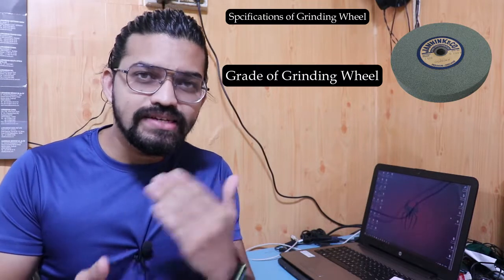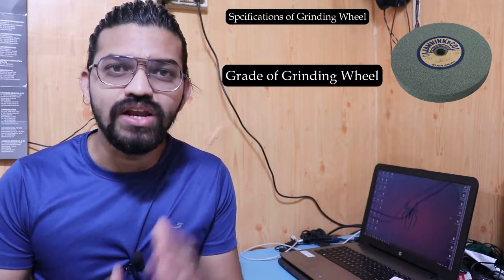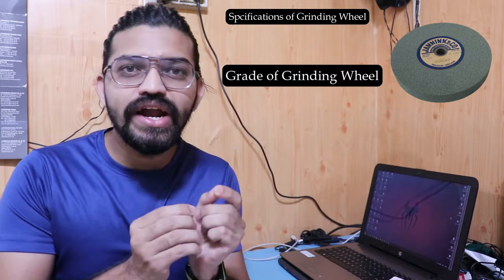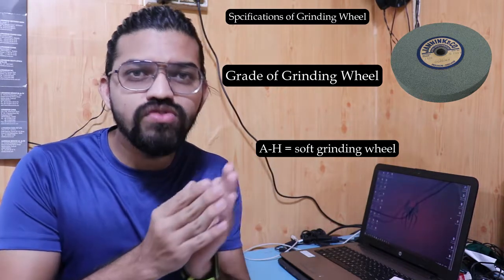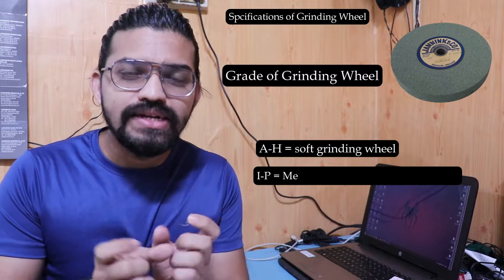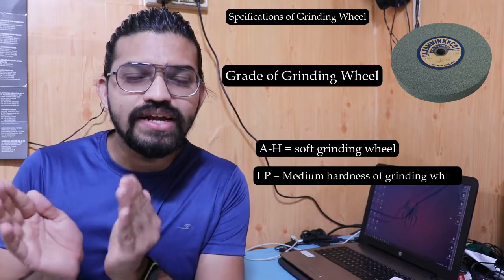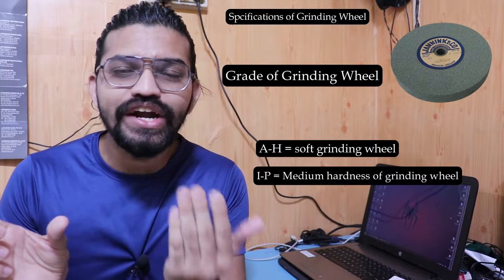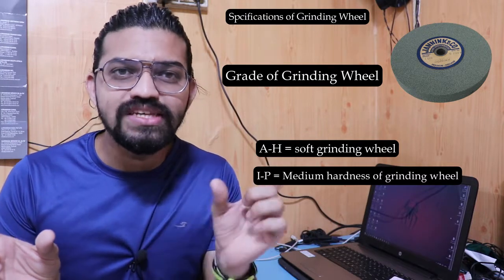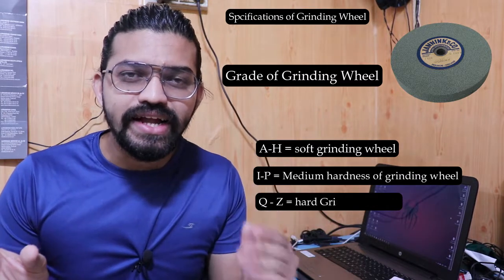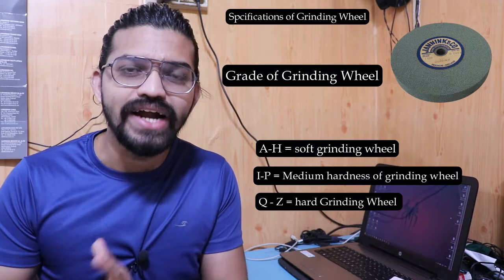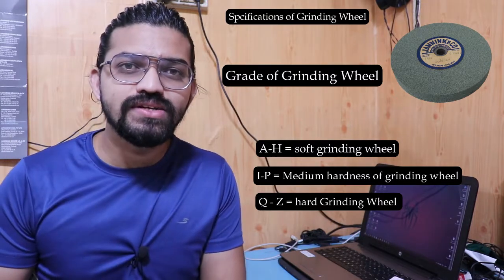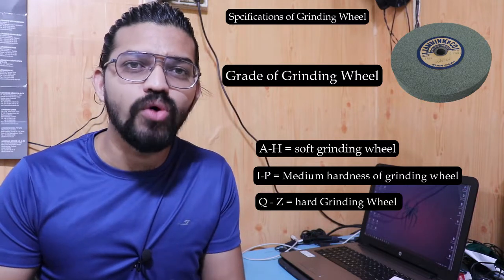The grade of the grinding wheel represents its hardness. If the grade is between A to H, it is a soft grinding wheel. If the grade is between I to P, it has moderate hardness. Grades from Q to Z represent extremely hard grinding wheels. The grade is selected purely based on the material of the workpiece.